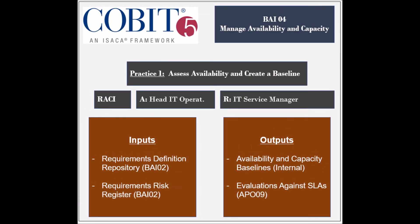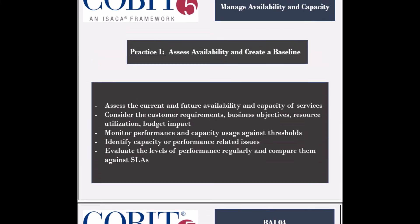The process has five practices. The first practice is to assess the current availability and capacity and create a baseline. The entity responsible for this practice is the IT service manager, while the entity held accountable is the head of IT operations. The practice receives two inputs: the requirements definition repository and the requirements risk register, both from the BAI2 process. The practice generates two outputs: the availability and capacity baselines, used internally, and the evaluations against the service level agreements, used by the APO9 process.